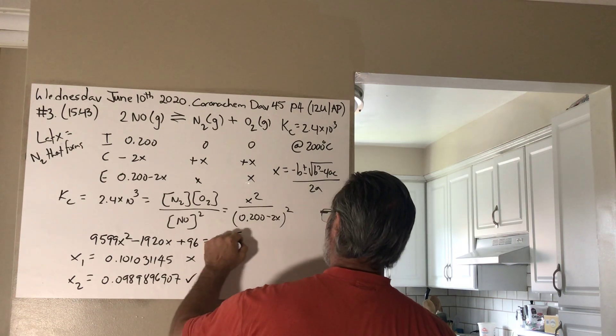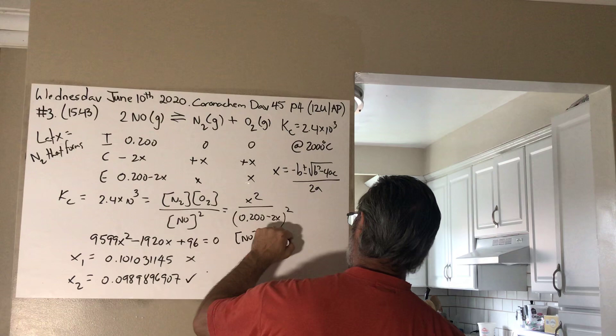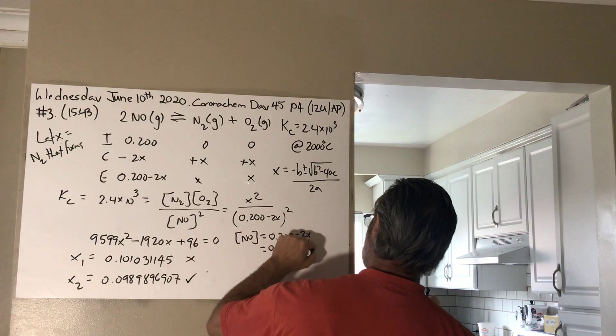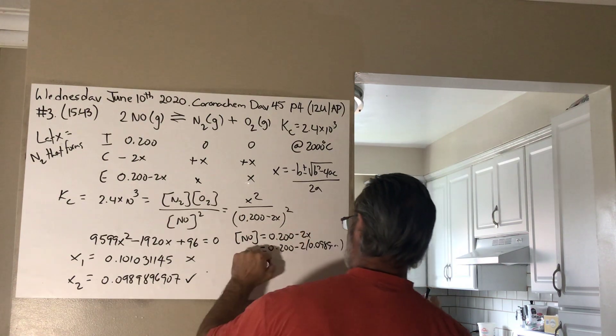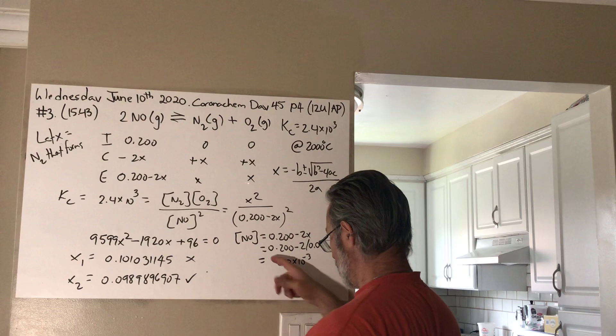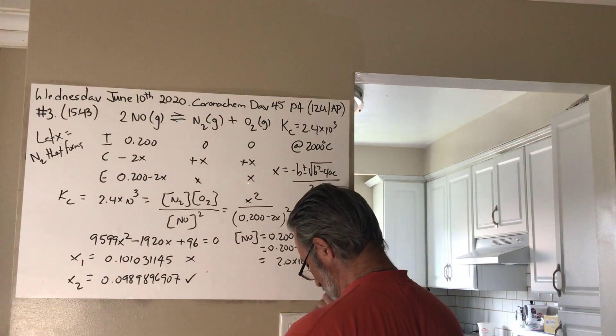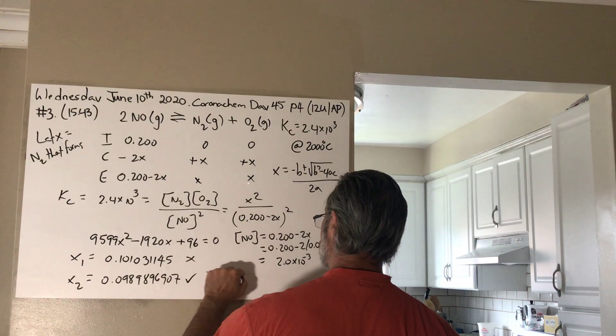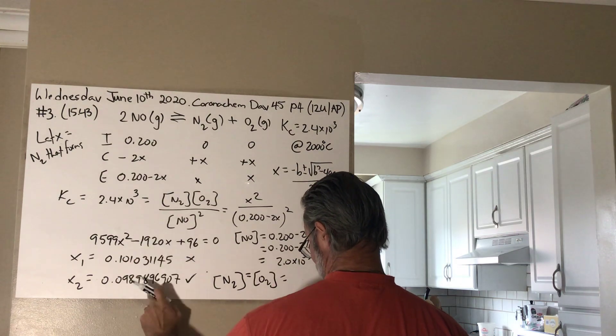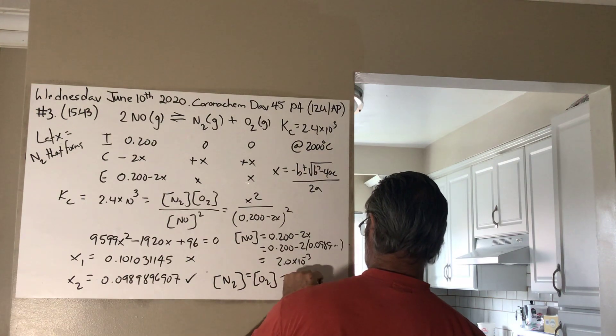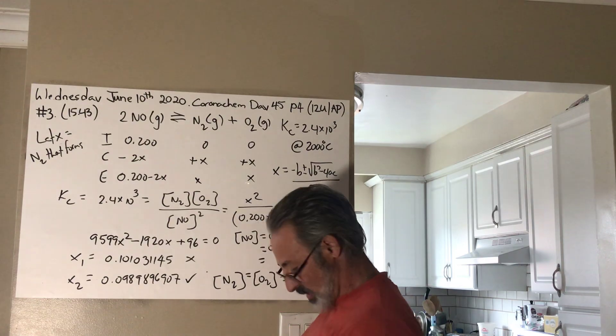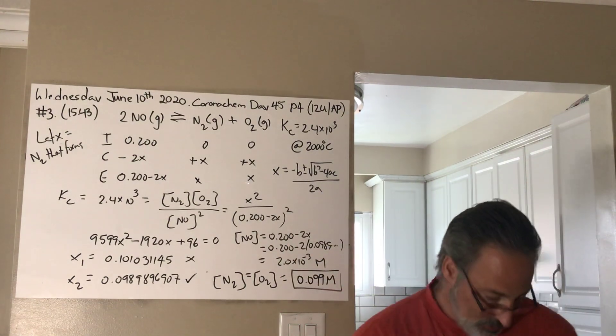So, for the first one, the NO concentration is going to be equal to 0.2 minus the 2x, which is equal to 0.2 minus twice 0.0989, etc., which gives you 2.0 times 10 to the minus. Essentially, after you do your sig figs, you get almost no change in the value because you don't have two sig figs. And your N2 and O2 concentrations are going to be equal and they come out to this number. So, you have to write the two sig figs. So, you're going to say 0.099 molar. That's a molar concentration as well. Okay. So, that one is solved. There's no additional parts on that one.